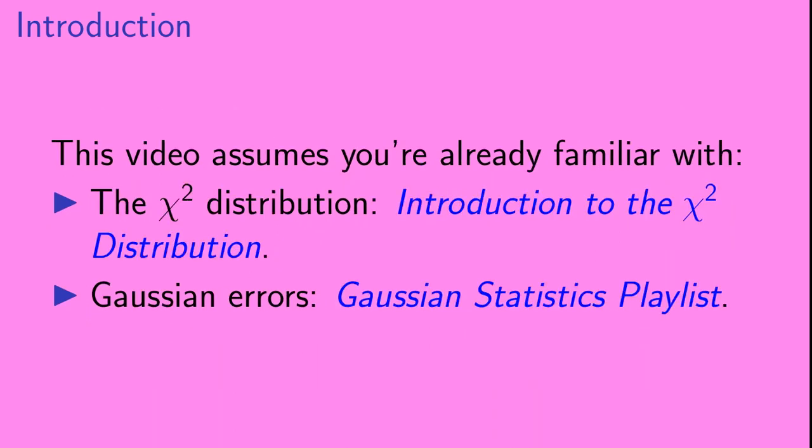Now, this video assumes that you're already familiar with a couple of topics. The first of those is the chi-squared distribution. If you're not familiar with that, you might want to check out the video Introduction to the Chi-Squared Distribution. This video also assumes that you're familiar with Gaussian errors. If you're not, you might want to check out the videos in the Gaussian Statistics playlist.